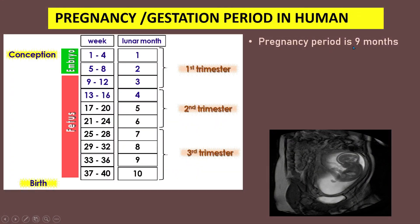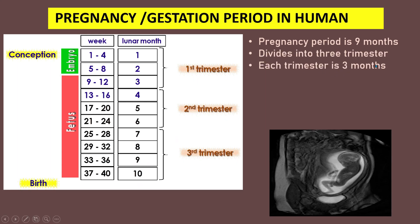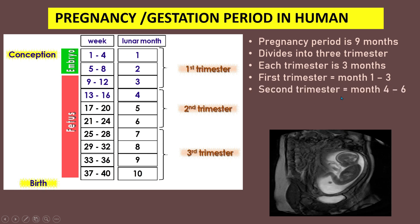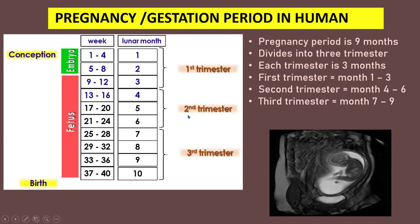The pregnancy period in humans is 9 months, divided into 3 trimesters, each trimester being 3 months. The first trimester is months 1 to 3, the second trimester is months 4 to 6, and the third trimester is months 7 to 9.